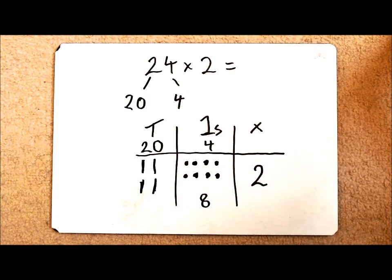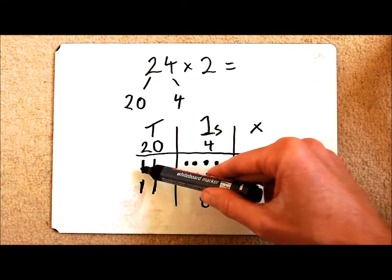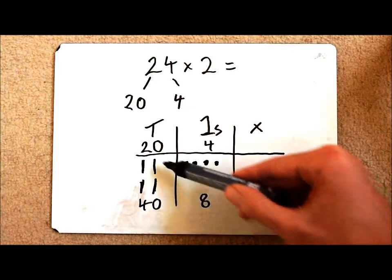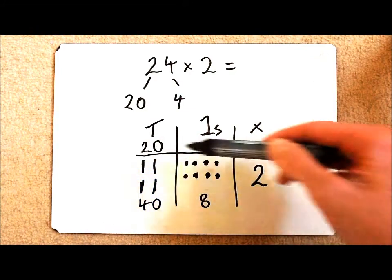Each of my sticks is worth 10, or rods. So 10, 20, 30, 40. So here is my array for 2 lots of 20.